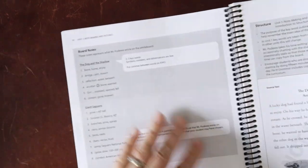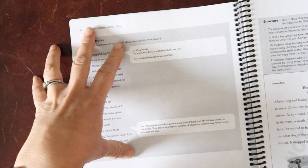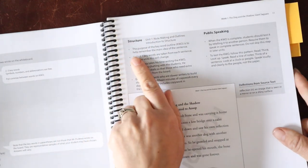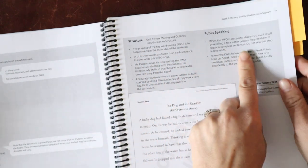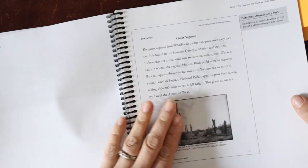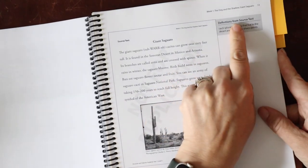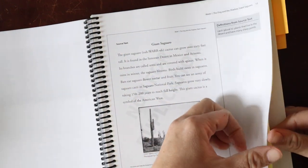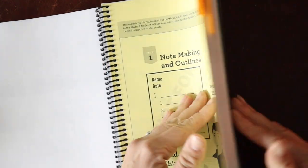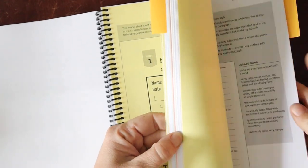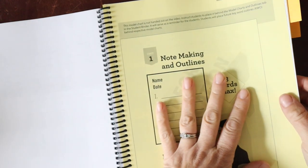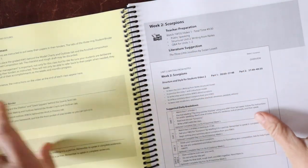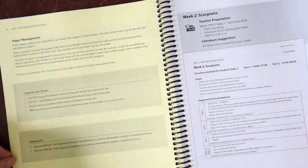They have board notes in this book. This is what Andrew Pudewa is writing on the board in his class that he's teaching via video. We go over here into the structure of note-taking and public speaking. They have some definitions from the source text that would not be included in the student book. They have different color pages that are color coordinated. The yellow ones are going to be like your model charts for note-taking, paper management, organizing your binder, homework.